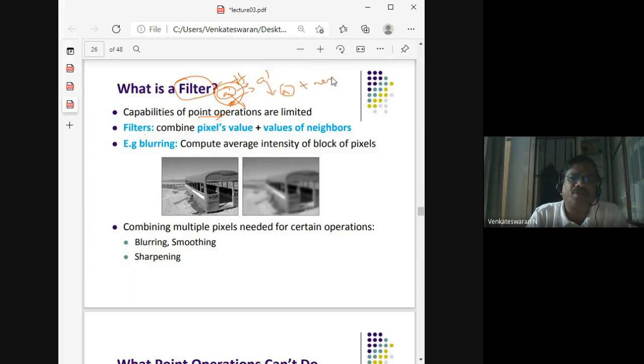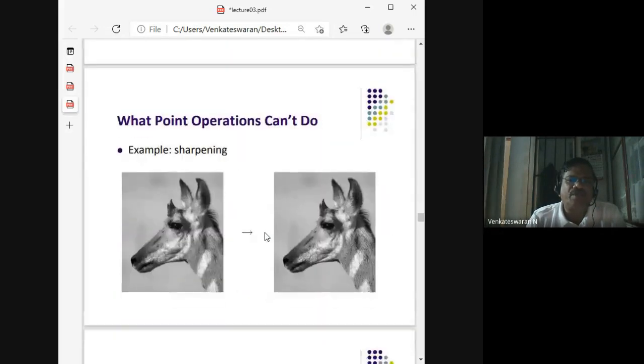For example, you have a very nice clear image here, but when you do some kind of blurring operation, it blurs the image. This actually has combined multiple pixels and took what is called an average intensity of the block of pixels. Average intensity you all know how to compute, so I'll take an average.